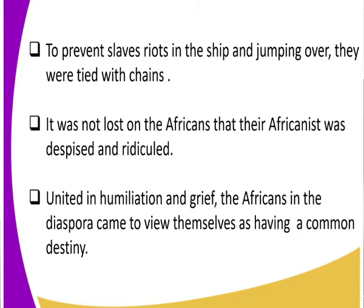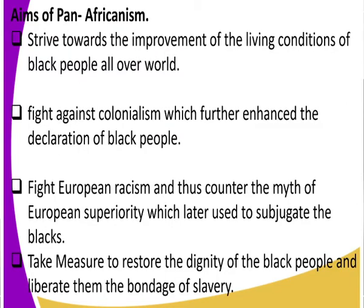What were some of the aims of Pan-Africanism? First, they strived towards improvement of the living conditions of the black people all over the world. Remember, these are people who went through a lot — misery, suffering, being tied in chains, being overworked, overloaded, and overburdened. So they were striving towards getting better living conditions for the black people all over the world.